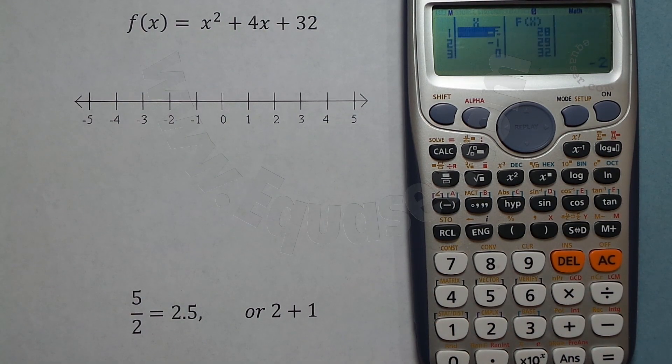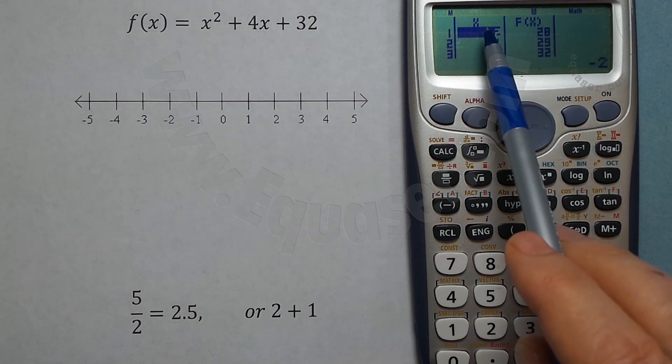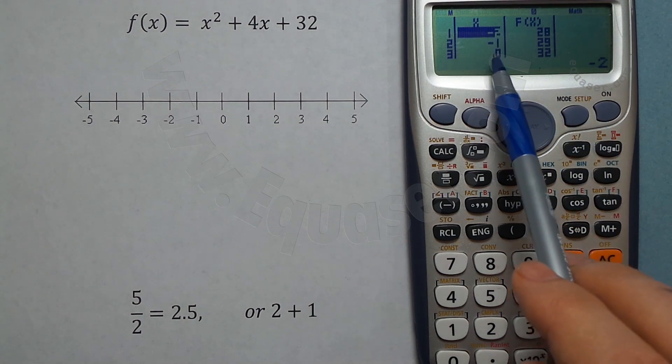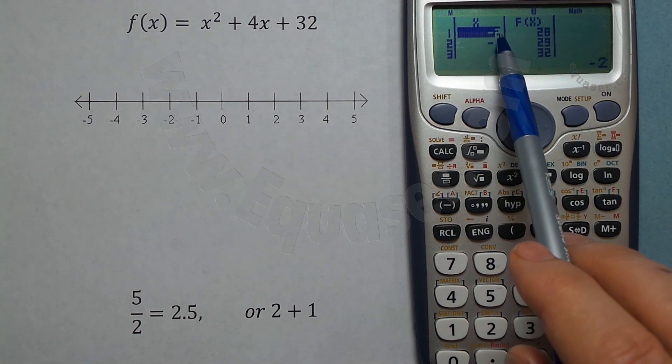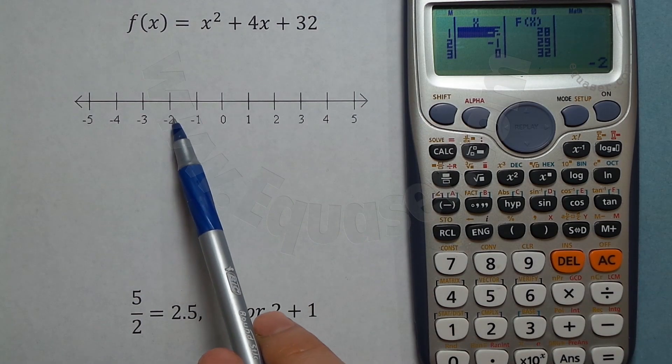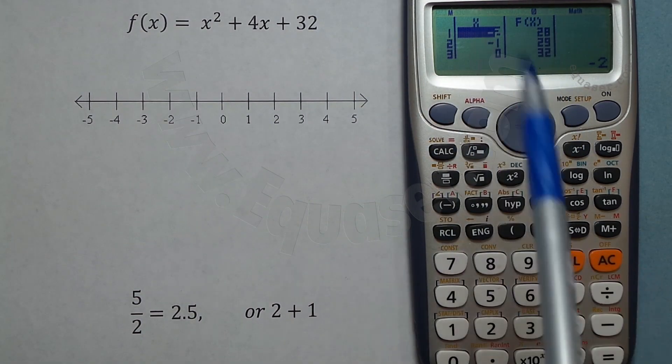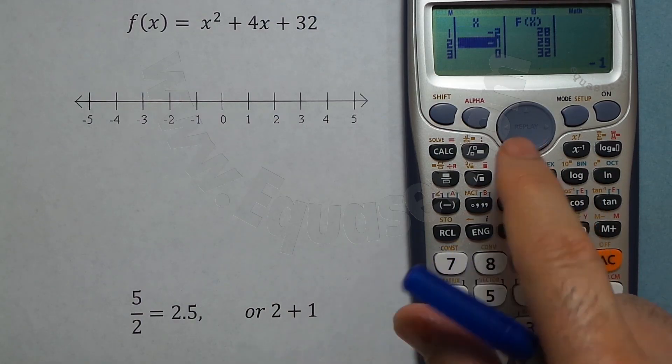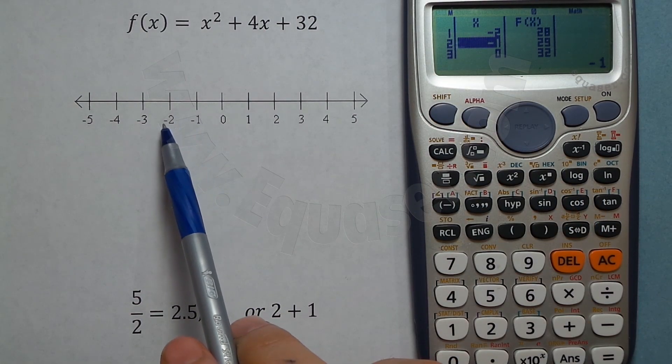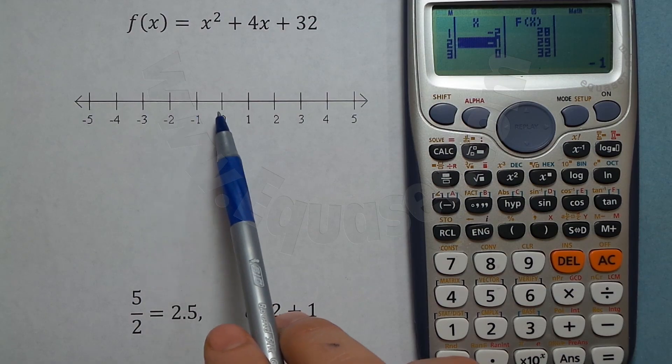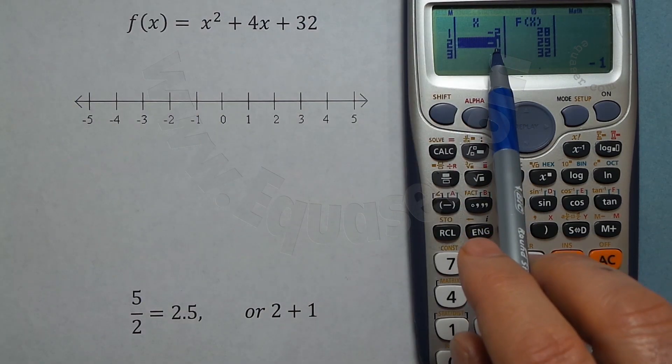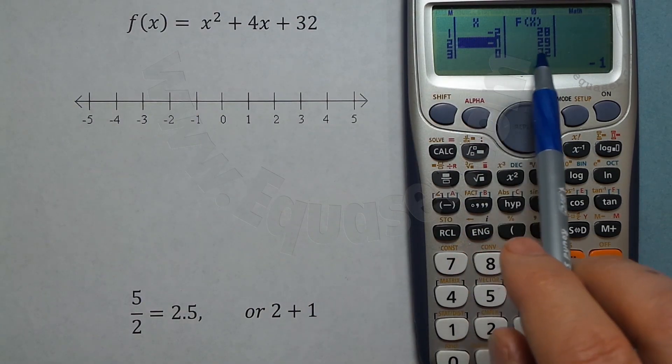For -2 which we entered, the function is 28. I scroll down - for every step: -2, -1, 0, 1. For -1 it's 29, for 0 it's 32. Yes, it makes sense - this is 0, this is 0, so 32. Now for 1.